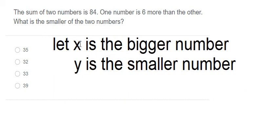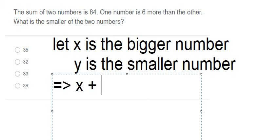So we have x and y and we don't know exactly, that's why we put x and y in here. The sum of two numbers is 84, so the first equation is x plus y equals 84.